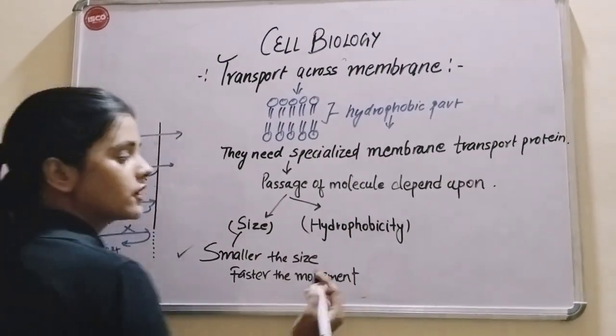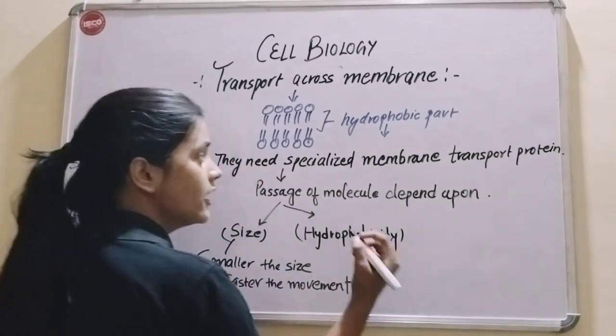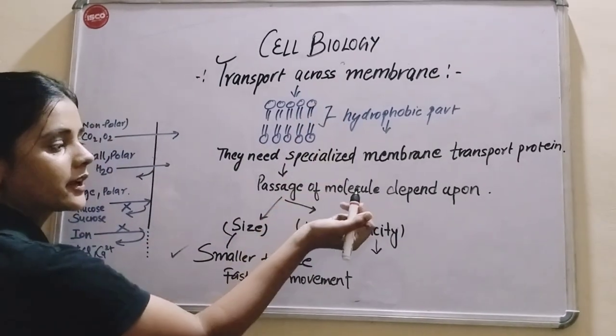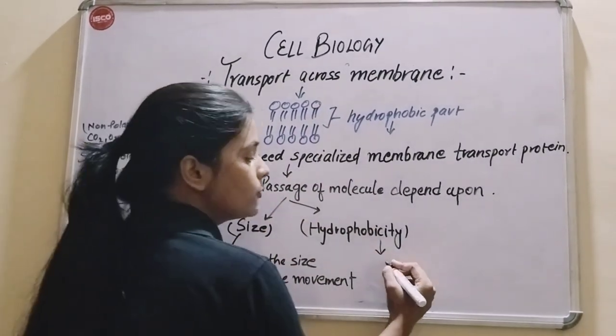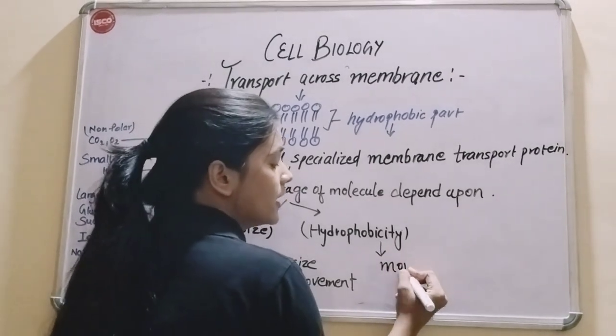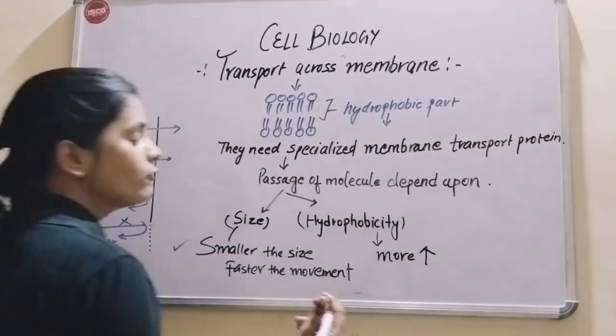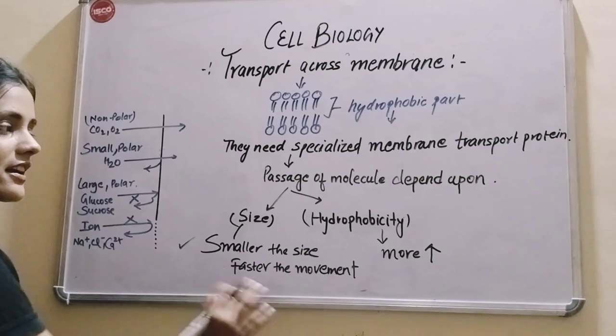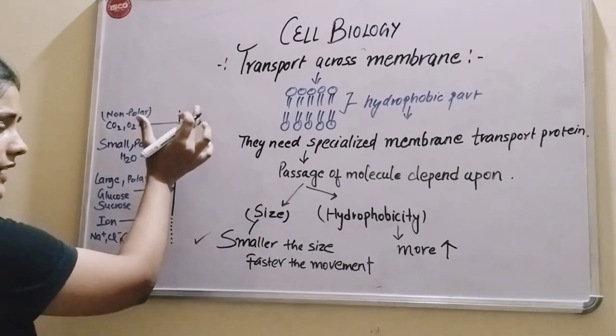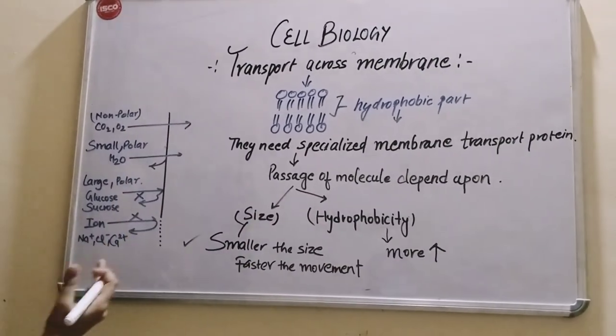We also need hydrophobicity. Why? Because the membrane is hydrophobic. So if hydrophobicity is more, then definitely there will be faster movement. Now we will see how passage occurs.